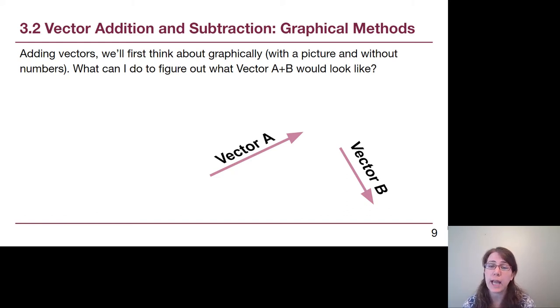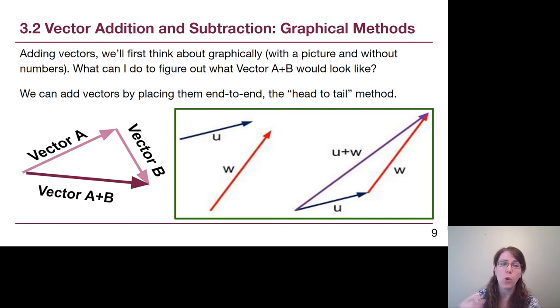Now, if I want to add vector A and B together, whether I'm thinking of this in a quantitative way or whether I'm thinking about it in a visual way, functionally what we are doing when we're adding vectors together is we're saying those might be two separate trips, but what if one person walked all along vector A and then also walked all along vector B? We get what's called the head to tail method, where we take one and we place it end to end. So the head of the first vector is where the tail of the second vector goes.